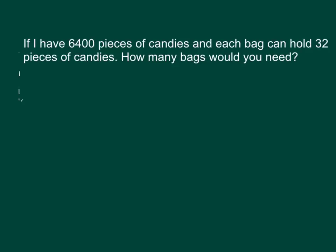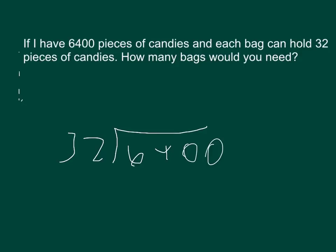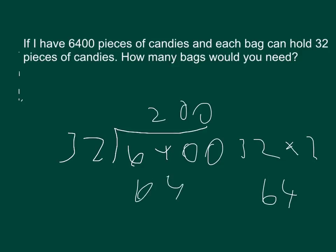To do that, we need to find some numbers that 32 can form. One number I know that 32 can form is 64, by multiplying 32 times 2. So if we need to get 6,400, we need to add two zeros to the 2, and that equals 200, leaving a remainder of 0.